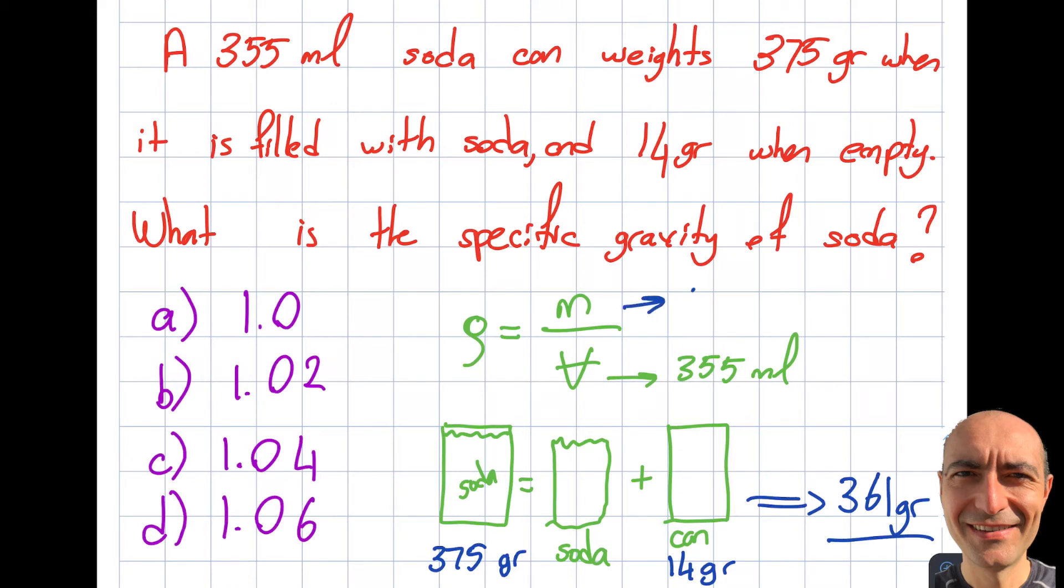Then I need to insert over here 361 grams, and if I punch this into my calculator, 1.017 grams per ml. So I was able to find the density.